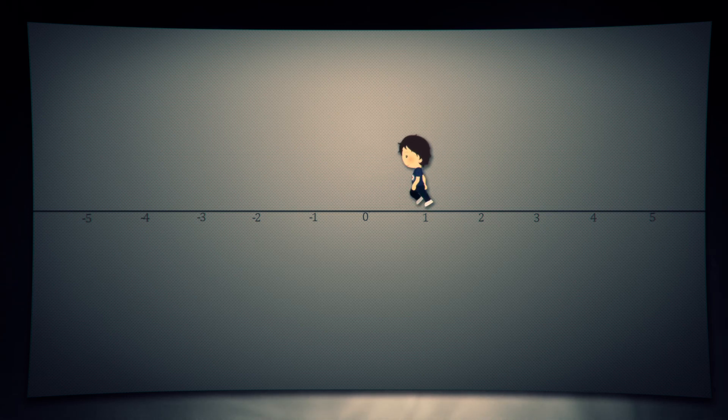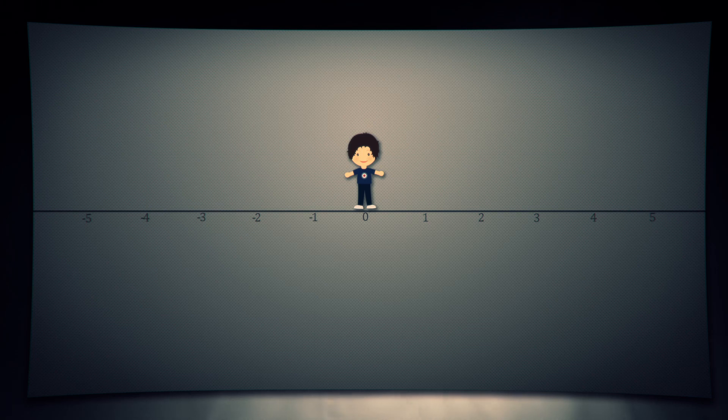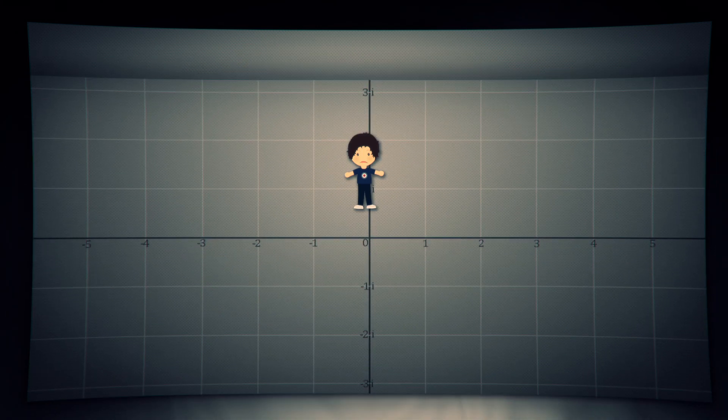We are used to seeing numbers in one dimension. Here is Tom, he can only move right and left. From 0, he can go to negative 4, 2, or even e. These are called real numbers. Yet,